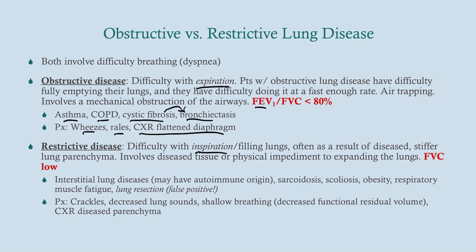With restrictive disease we're talking about difficulty with inspiration, or filling the lungs. This is often due to diseased or stiffer lung parenchyma, but not always — it can also involve a physical impediment to expanding the lungs. The FVC will be low because they have difficulty filling their lungs, while the FEV1 is fairly normal because they don't have problems emptying. So the FEV1/FVC ratio will be normal or even increased — that's one of the key differentiators from obstructive disease.